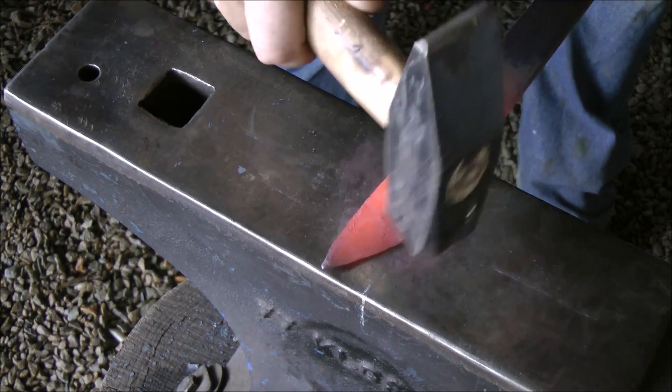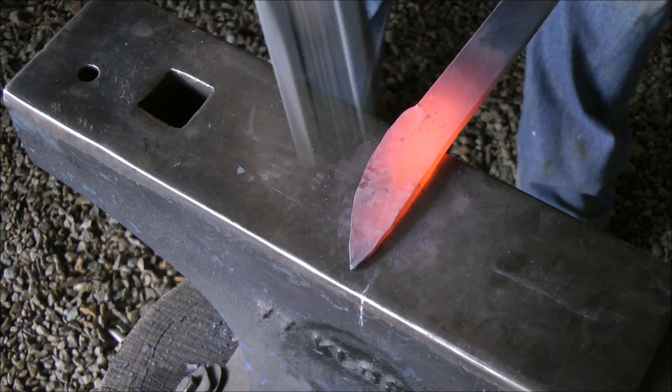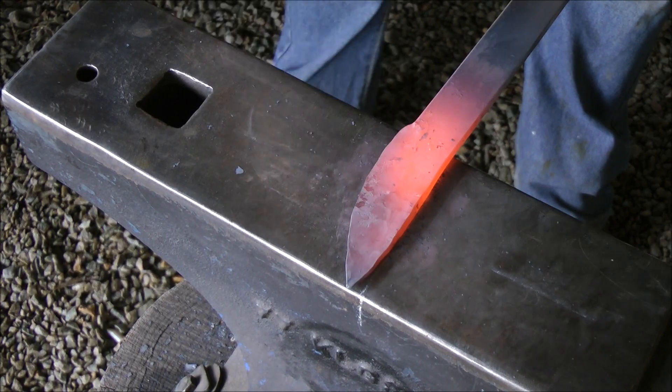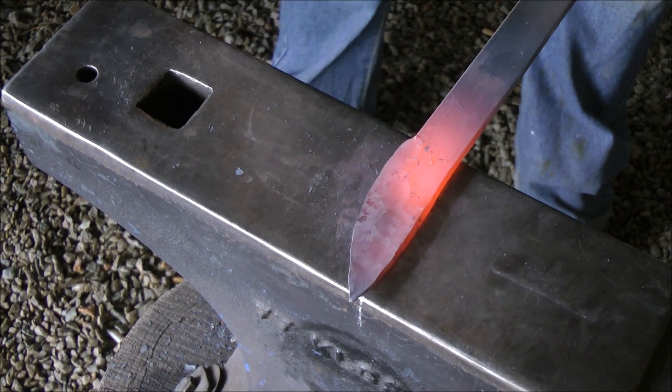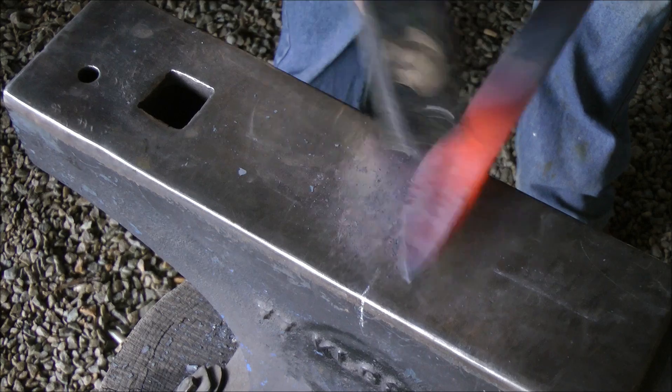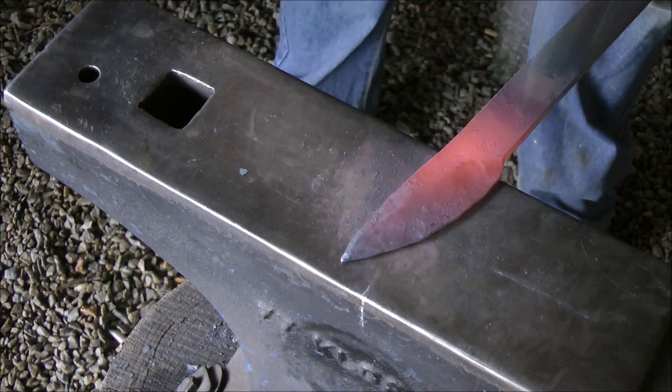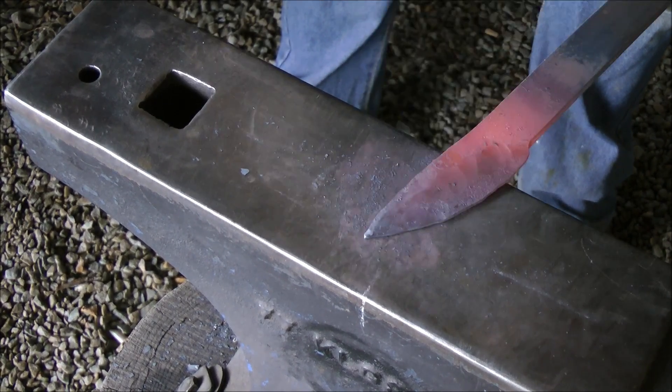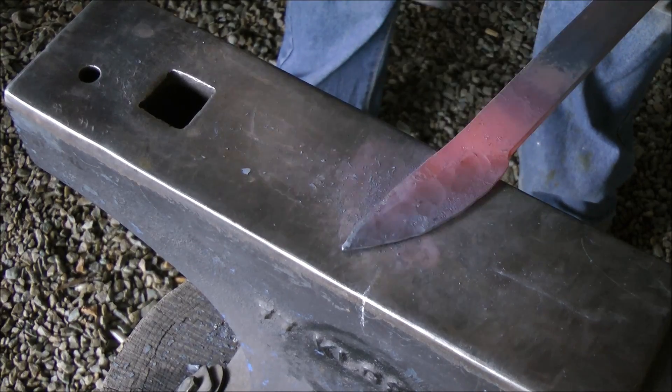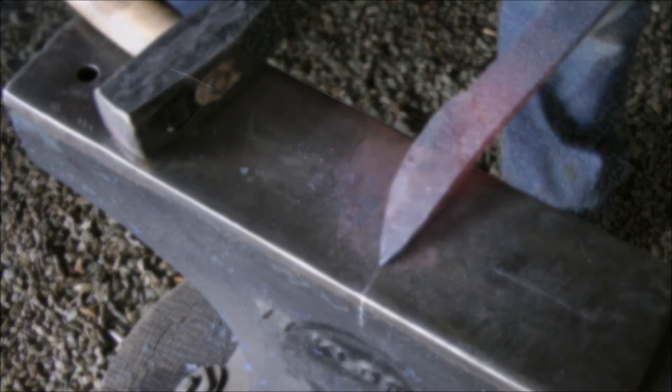Now I'm starting at the tip, you'll see where my hammer blows are landing, right in the middle, from the back, once again straight to the tip. I'm losing colour in my metal, so it's back into the forge.